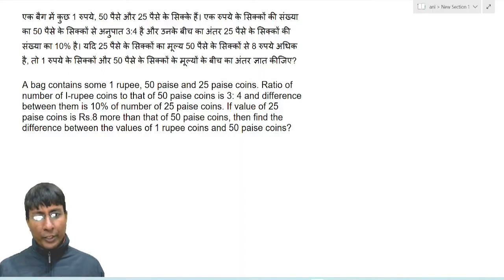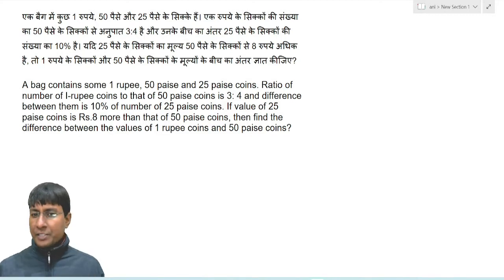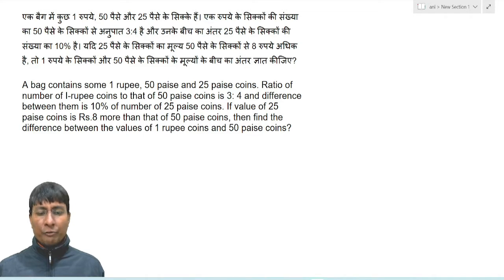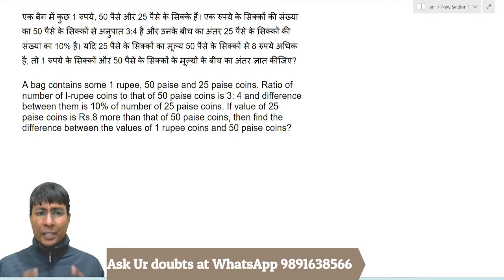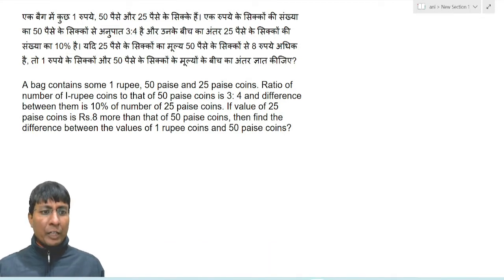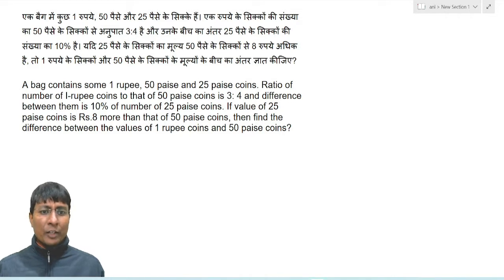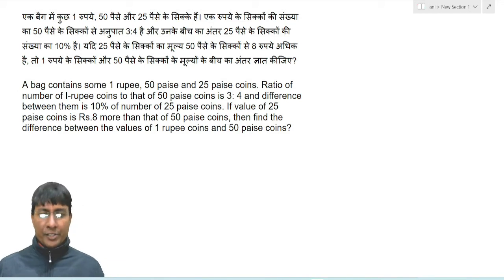A bag contains some one rupee, 50 paise, and 25 paise coins. The ratio of the number of one rupee coins to that of 50 paise coins is 3 to 4, and the difference between them is 10 percent of the number of 25 paise coins. If the value of 25 paise coins is Rs. 8 more than that of 50 paise coins, find the difference between the value of one rupee coins and 50 paise coins.